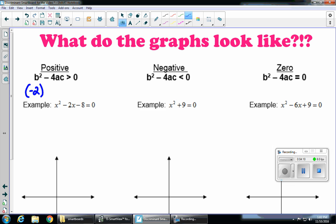B would be negative 2. A would be 1, and C would be negative 8. So if we type that in our calculator, we're going to get 36. So there's our positive number.